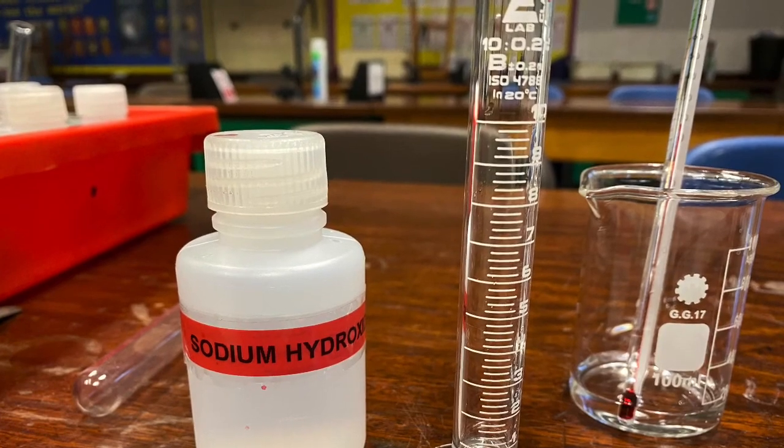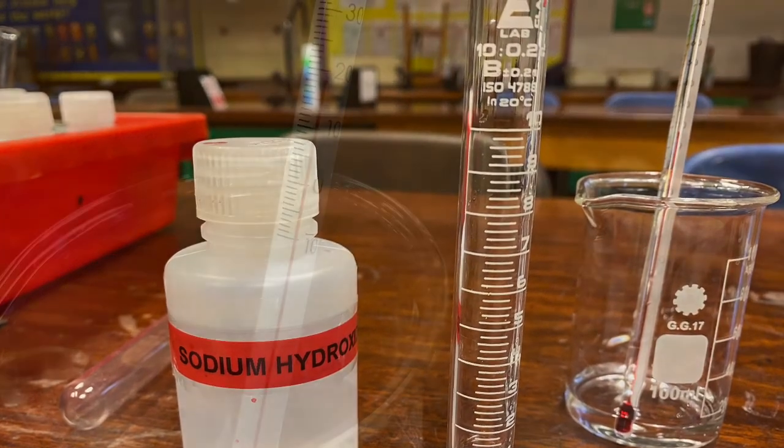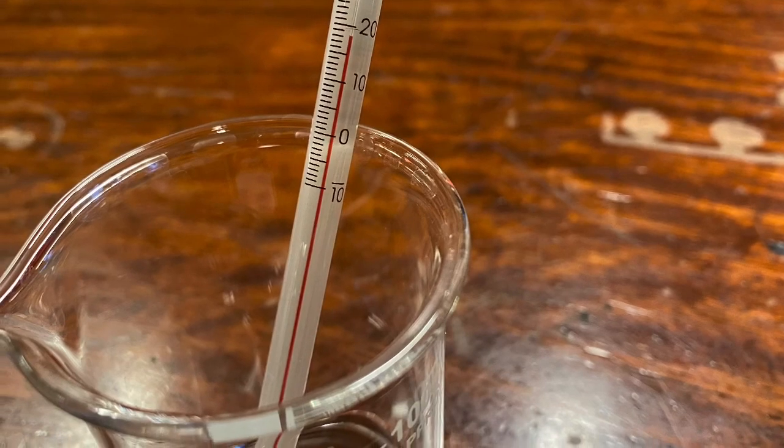Add another 10 centimeters cubed, this time of sodium hydroxide, to the beaker. See what happens to the temperature using the thermometer.